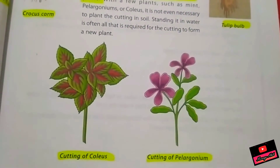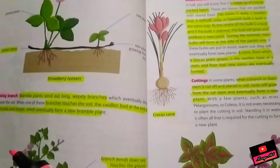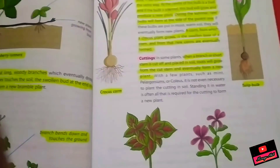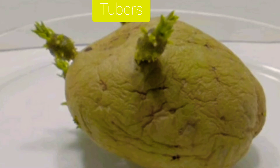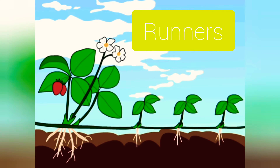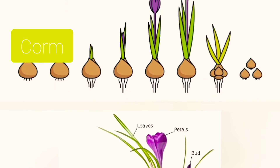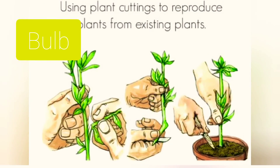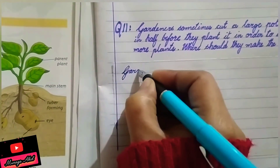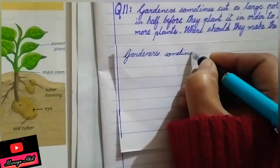We have studied five types of vegetative reproduction: tubers, runners, rooting branch, bulbs and corms, and cuttings. Tubers — underground stems; runners — strawberry plants; rooting branches — gul-e-daudi, woody and mint; corms; bulbs; and cuttings.